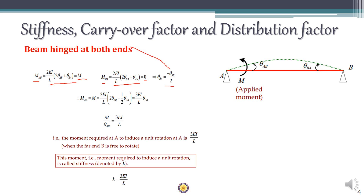Substituting this back into the equation, we get M_AB equals 3EI/L times theta_AB, so M divided by theta_AB equals 3EI/L, which is nothing but the stiffness. Therefore, when the far end is hinged, the stiffness at the near end is 3EI/L.